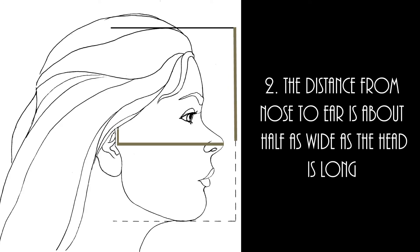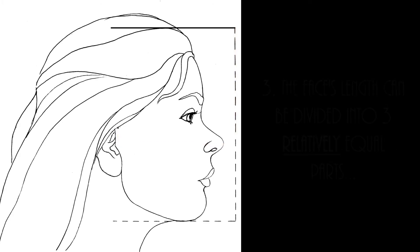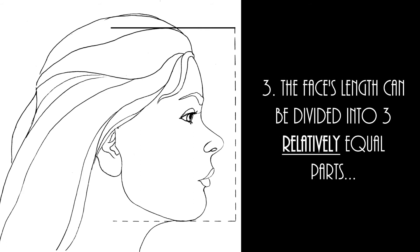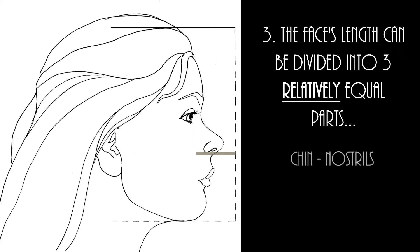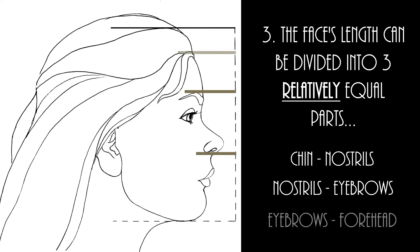Additionally, you can divide the head from chin to forehead into three relatively equal parts. The lower third roughly represents the distance from chin to nostrils. The middle part describes the distance from nostrils to eyebrows, and the last third shows the distance from eyebrows to forehead.